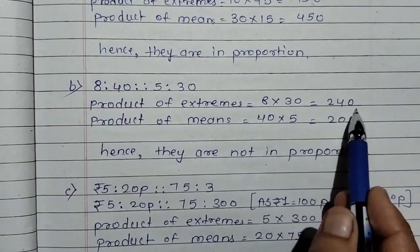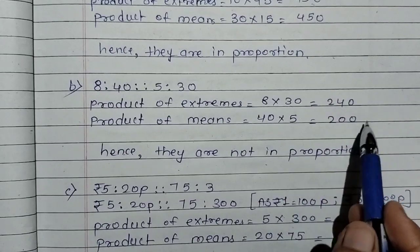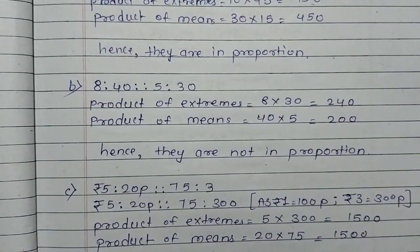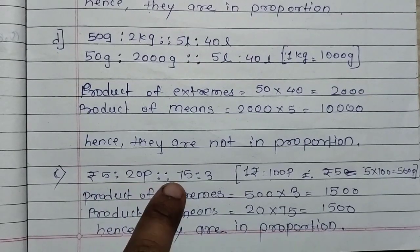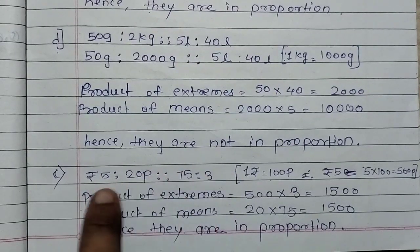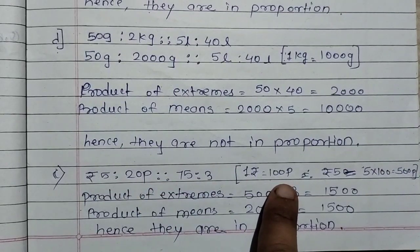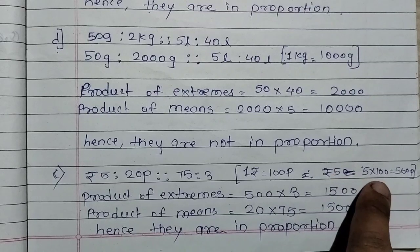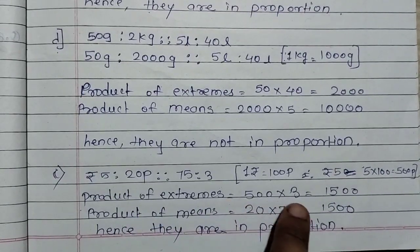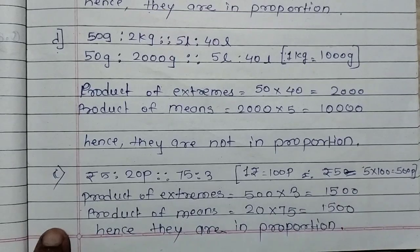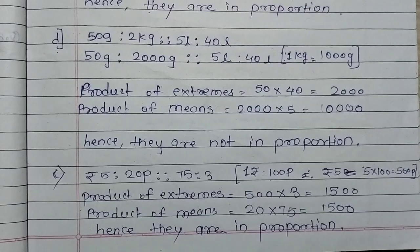Part b is the same. 8 into 30 is 240. And 40 into 5 is 200. So both are not equal, hence they are not in proportion. Next, see part c: rupees 5 is to 20 paisa equals 75 paisa is to 3 paisa. So here you have to convert the rupees. 1 rupees equals 100 paisa. So 5 rupees means 5 into 100 is 500 paisa. So product of extremes: 500 into 3 is 1500. And product of means: 20 into 75 is 1500. Hence they are in proportion.